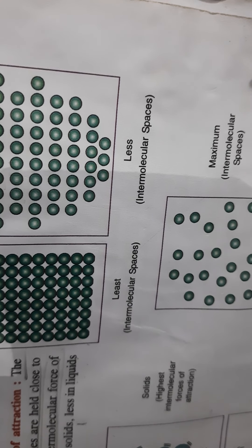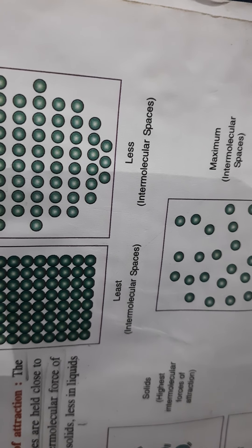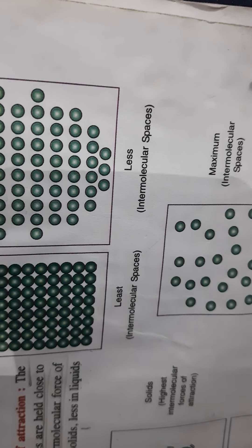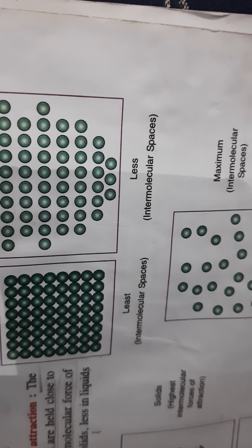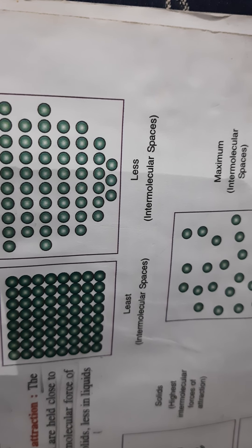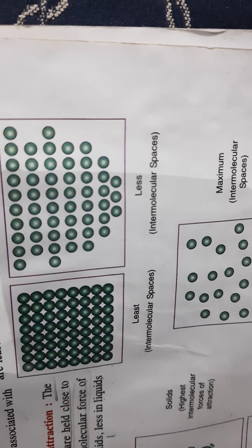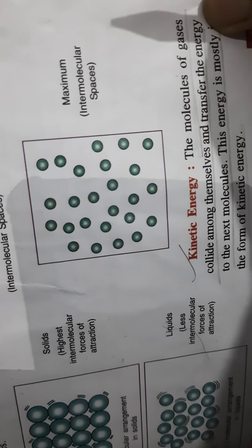And in gases, the intermolecular space is maximum. So to summarize: intermolecular force of attraction is maximum in solids and intermolecular space is least. In liquids, force of attraction is less compared to solids but intermolecular space is more compared to solids. In gases, intermolecular space is maximum with very little or no force of attraction.